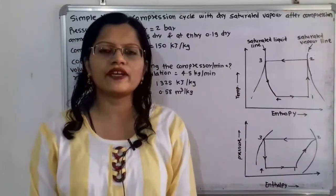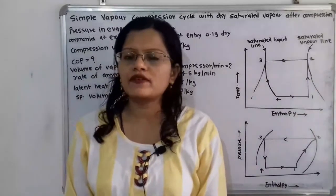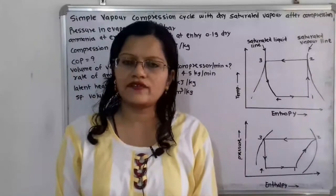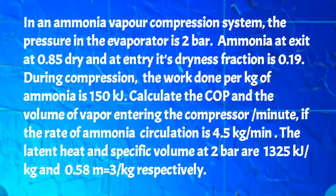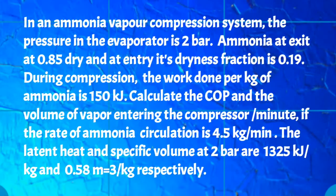Hello friends, this is Priyanka. Today we are going to solve a problem on vapor compression refrigeration cycle with dry saturated vapor after compression. In an ammonia vapor compression system, the pressure in the evaporator is 2 bar, ammonia at exit is 0.85 dry, and at entry its dryness fraction is 0.19. During compression, the work done per kilogram of ammonia is 150 kilojoule.